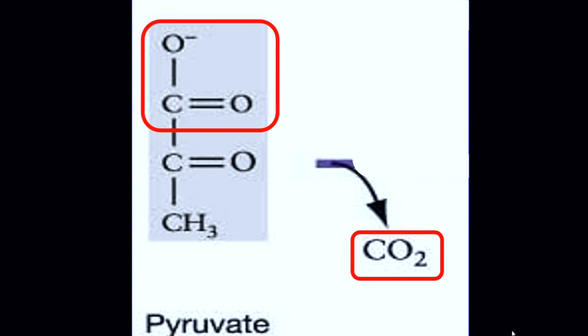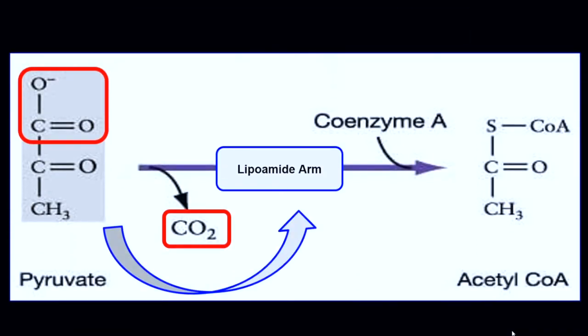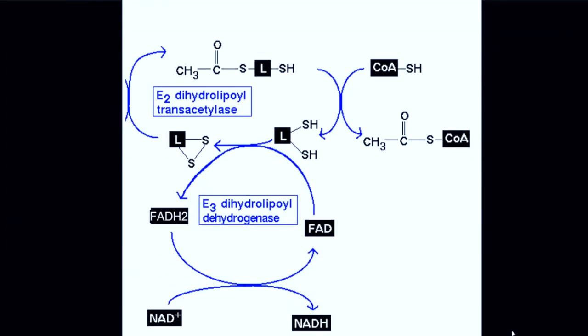Next, it hands off the two-carbon molecule made in the E1 subunit to the E2 subunit arm, which we call a lipoamide. At the E2 subunit, the products attached to the lipoamide arm are then transferred to coenzyme A, forming acetyl-CoA.